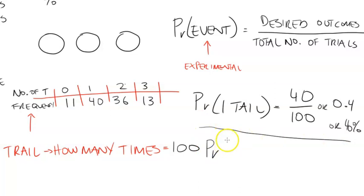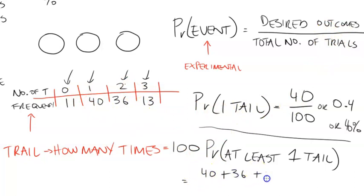Then what I want to look at is maybe a tricky question that looks into maybe the probability of at least, at least one tail. At least one tail. So of these scenarios, here, here, here, and here, how many of them have at least one tail? Well, this one has at least one tail. So does this one, and so does this one. So the desired outcomes is the 40, plus the 36, plus the 13, and not this one, the 11, because there's no tail within that scenario. This is all over 100. So that is 89 out of 100, or 89%.